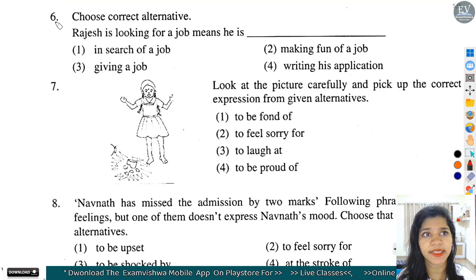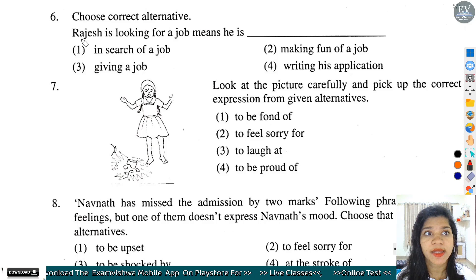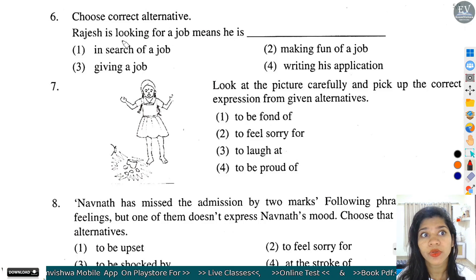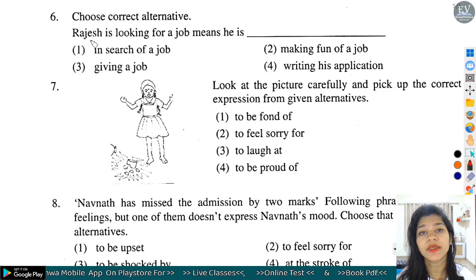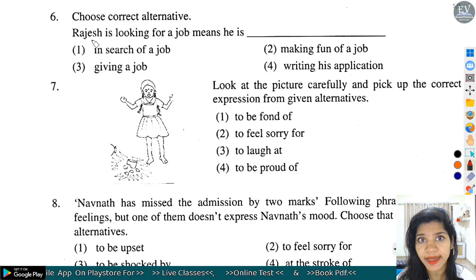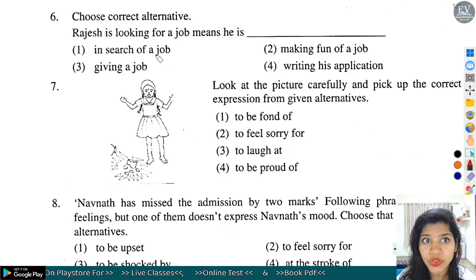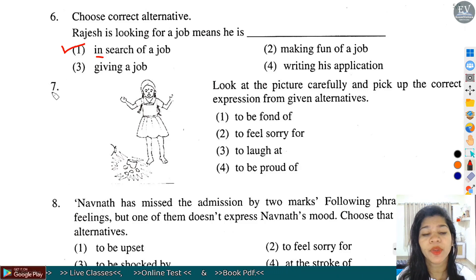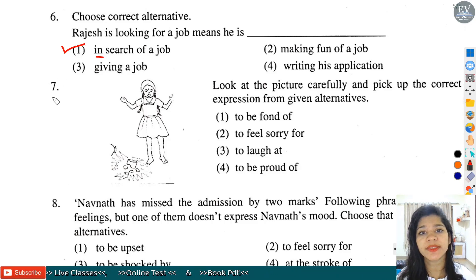Question number 6: Choose correct alternatives. Rajesh is looking for a job - means he is dash. Rajesh job को search कर रहा है. It means 'in search of a job'. तो option number 1 हमारे यहां पर correct होगा.